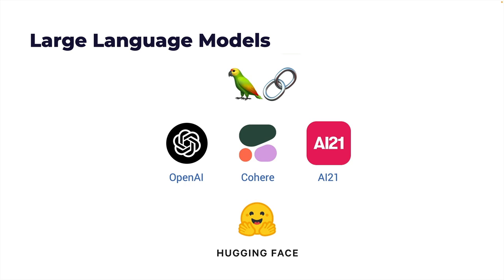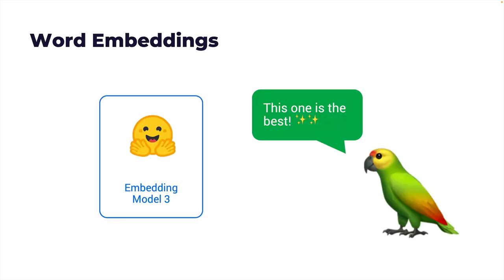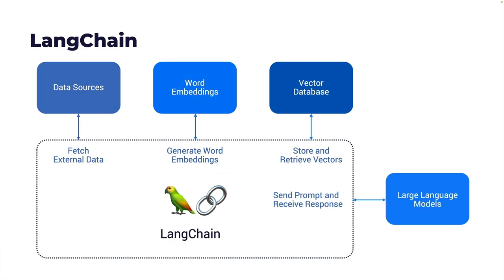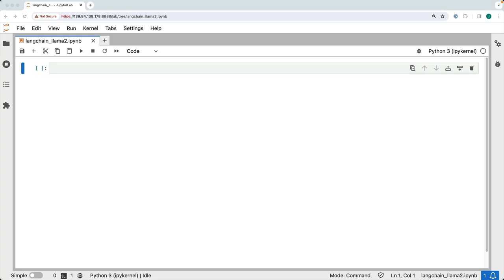To recap, LangChain is a framework that helps us build LLM-based applications by orchestrating everything from data source to the LLM, letting us focus on the application rather than the plumbing of fetching data and generating word embeddings. In the next demo, I'm going to introduce LangChain with LLM — we'll see how to integrate LangChain with LLAMA2 running in the Vultr GPU stack as part of the Hugging Face text generation inference container.